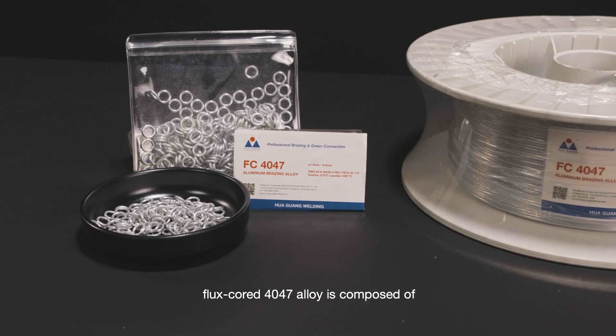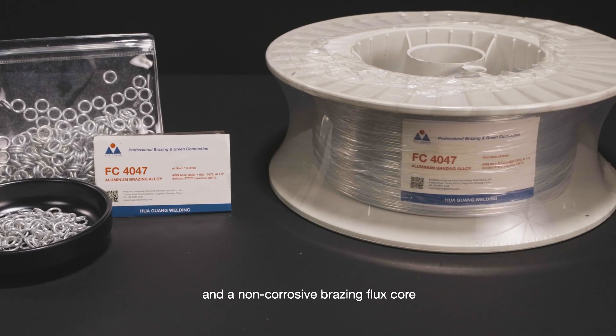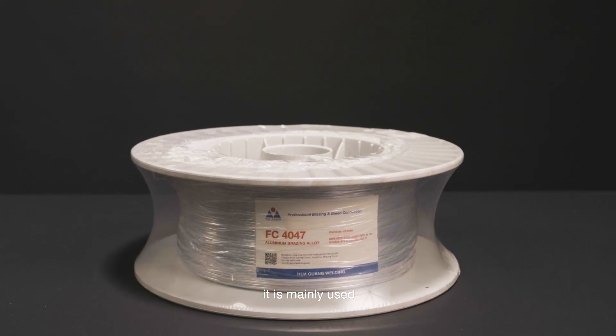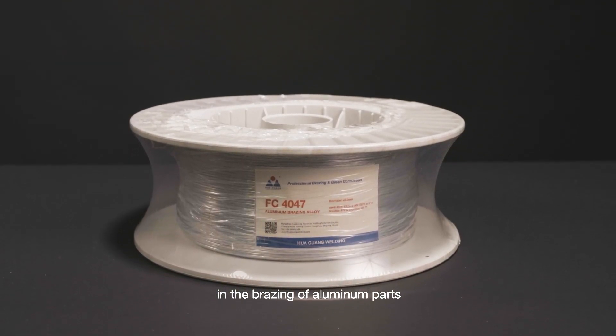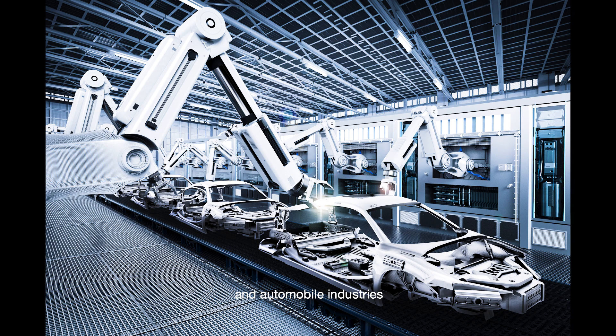Flux-cored 4047 alloy is composed of an aluminum silicon alloy shell and a non-corrosive brazing flux-core. It is mainly used in the brazing of aluminum parts and aluminum copper dissimilar components in the HVAC and automobile industries.